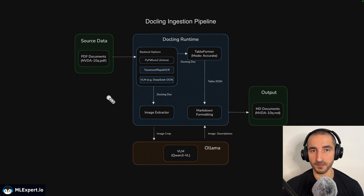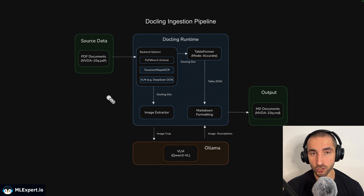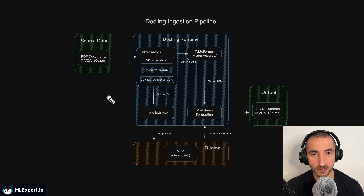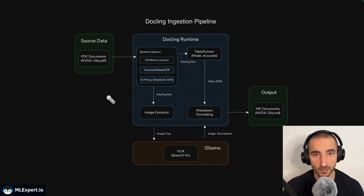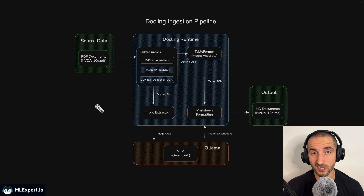While Docling supports a lot of document formats such as Word documents, Excel and HTML, we're going to be focusing on PDF files since they are by far the most challenging format and one of the most used in production. Here we have a very simple pipeline that contains three different components. The first is a PDF reader, which is going to be PyPDF2. Since our documents are going to be digital PDF files we don't want to do any OCR extraction - we just want to read the text from the PDF files themselves.